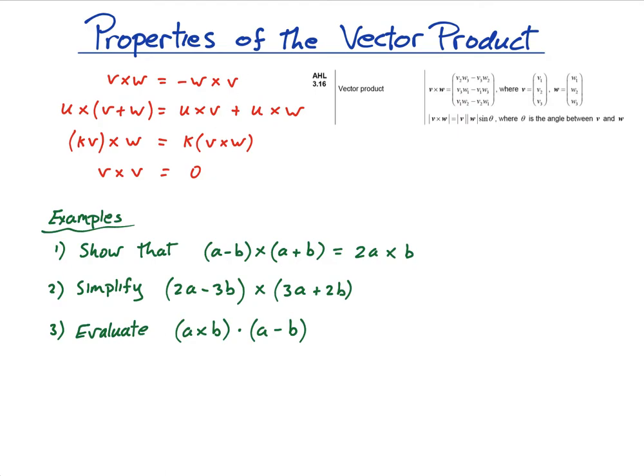Hi guys, so in this video we're just going to look at the properties of the vector product. So we had this in the previous lesson, v cross w is equal to negative w cross v. So it's the same magnitude but it goes the opposite direction.